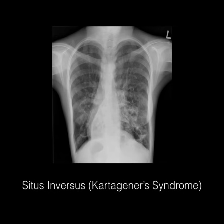Here we're looking at situs inversus, which is classic of Kartagener syndrome. You see that the heart is kind of mirror-image flipped onto the right side — the mediastinum should be more towards the left, so in this case we've got situs inversus.